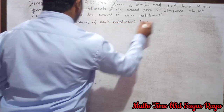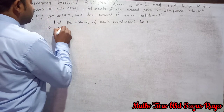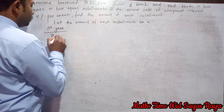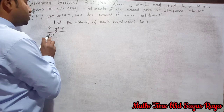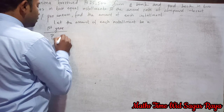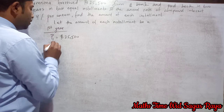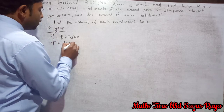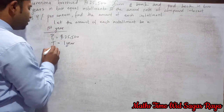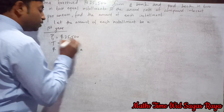Let the amount of each installment be x. Now for the first year, the principal for the first year will be rupees 25500. Since we are doing this for the first year, time will be one year.